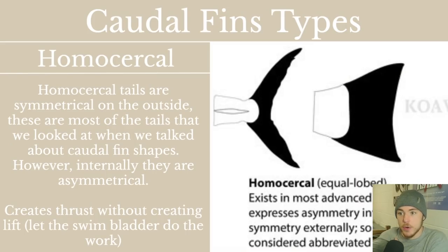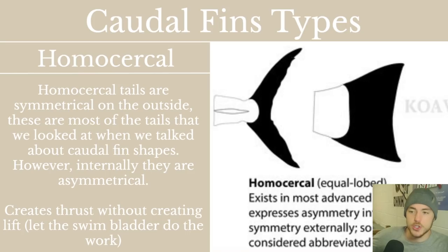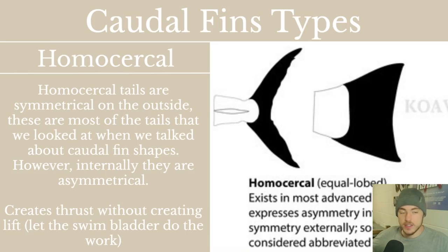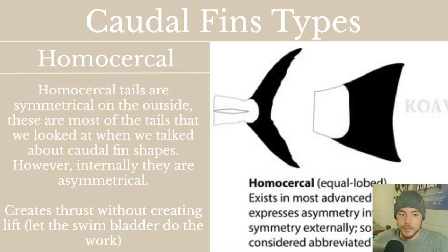Then we have homocercal — homo, the Latin root meaning 'the same.' Homocercal tails are symmetrical on the outside, which includes most of the tail shapes we discussed like lunate, truncate, and emarginate. But internally, they are actually asymmetrical to some degree. They create thrust without creating lift. You'll find these in fish that have swim bladders most of the time, because they are not intended to create lift — the two sides of the tail are equal, thrusting the fish along. The swim bladder handles buoyancy, so nothing is sacrificed in terms of thrust. You'll find this generally in fast-moving fish with swim bladders.